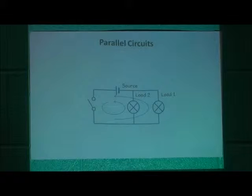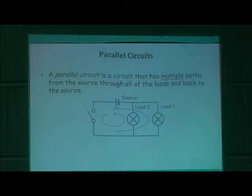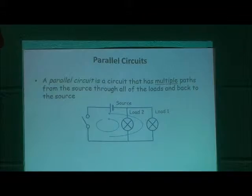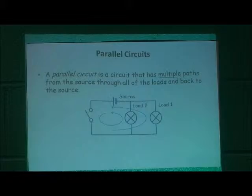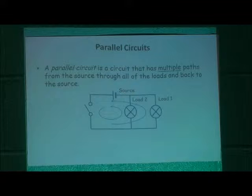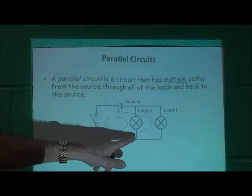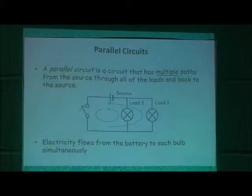Now we discuss parallel circuits. A parallel circuit has not one path through all components, but multiple paths from the source through all the loads and back to the source. We have two separate paths — electricity starts at the source, and when the switch is closed, it splits: some goes through one path, some through another. So electricity flows to each bulb not in turn, but simultaneously.